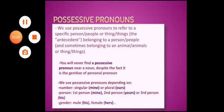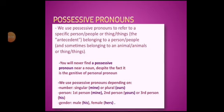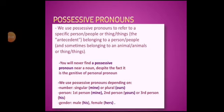Now, possessive pronouns. We use possessive pronouns to refer to a specific person, people, or thing belonging to the person or people. A possessive pronoun is the genitive form of a personal pronoun. We use possessive pronouns depending on number — singular 'mine', or plural 'ours'. Person: first person 'mine', second person 'yours', third person male 'his', female 'hers'. The definition: a pronoun that shows possession is called a possessive pronoun.